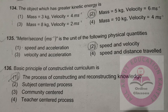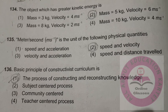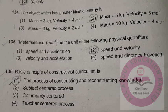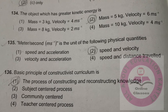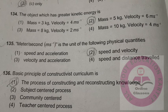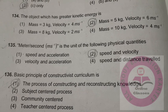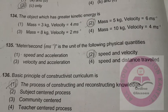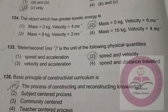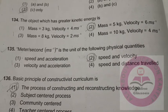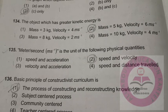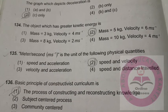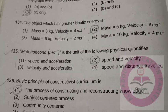Question number 135 is the unit of the following physical quantities. Option number 2: speed and velocity — find the unit of speed and velocity.